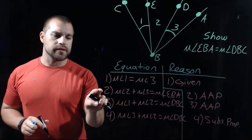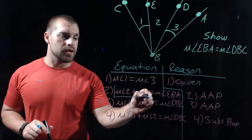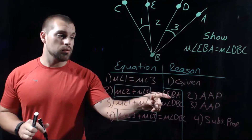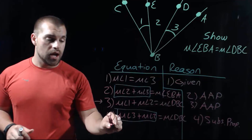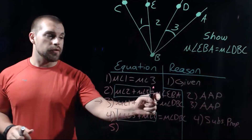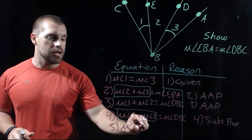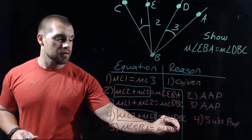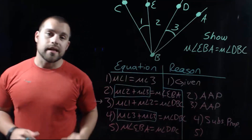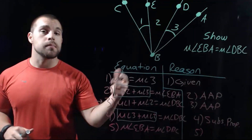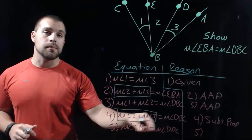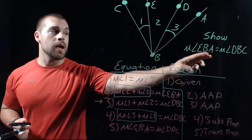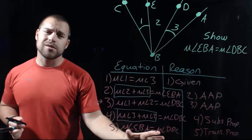Looking at steps two and four, both have the measure of angle 2 plus the measure of angle 3 on one side. So we take what each of those equals on the other side and set them equal to each other. The measure of angle EBA equals the measure of angle DBC. That's our transitive property — both were equal to the measure of angle 2 plus the measure of angle 3, so we can set them equal to each other. And that's what we wanted to show — we're done.